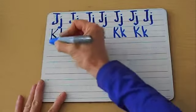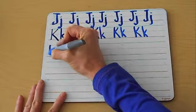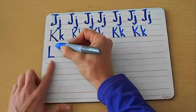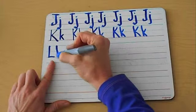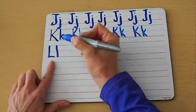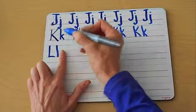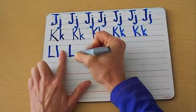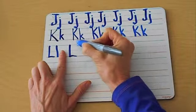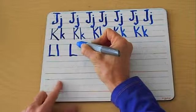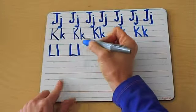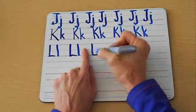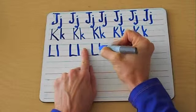L. Another tall letter, top to bottom and across. The lowercase L is just like this — it looks like a one, but it's an L. One finger space. Watch this, and across the red line. And the lowercase L, top to bottom. One finger space. Uppercase L, lowercase L.